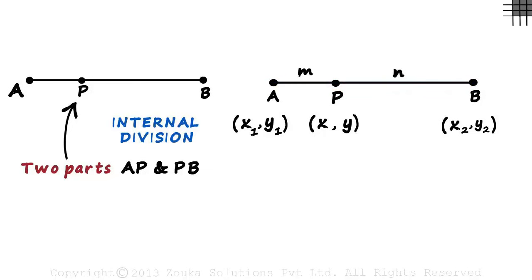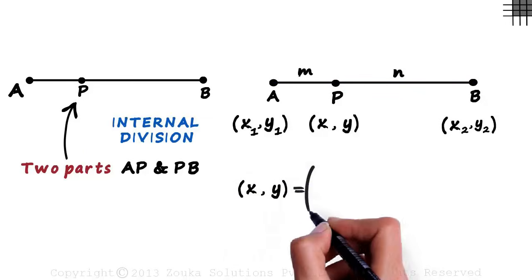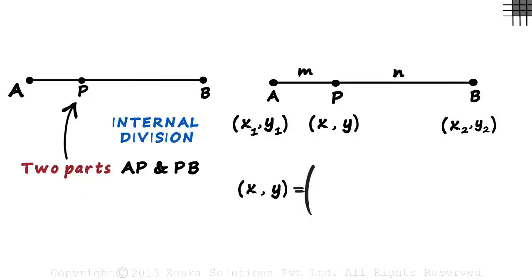We have to find x comma y using all the information we have. So this is how the internal division formula goes. Looks really complicated at first but in actual fact is very simple.